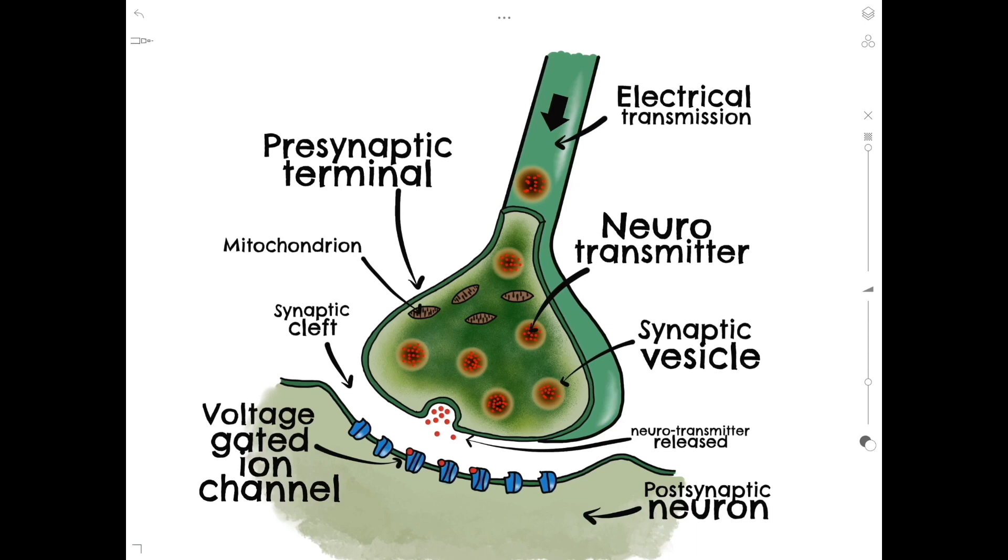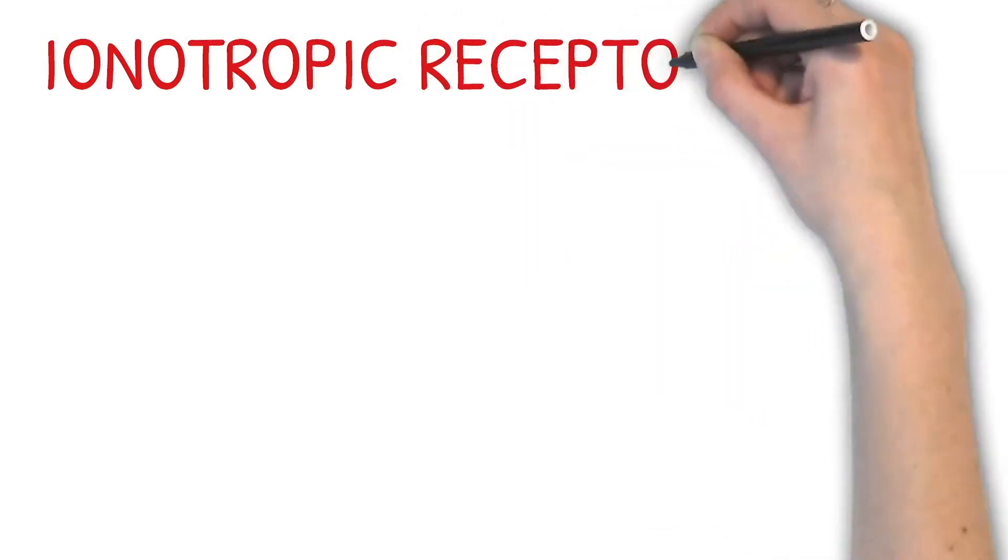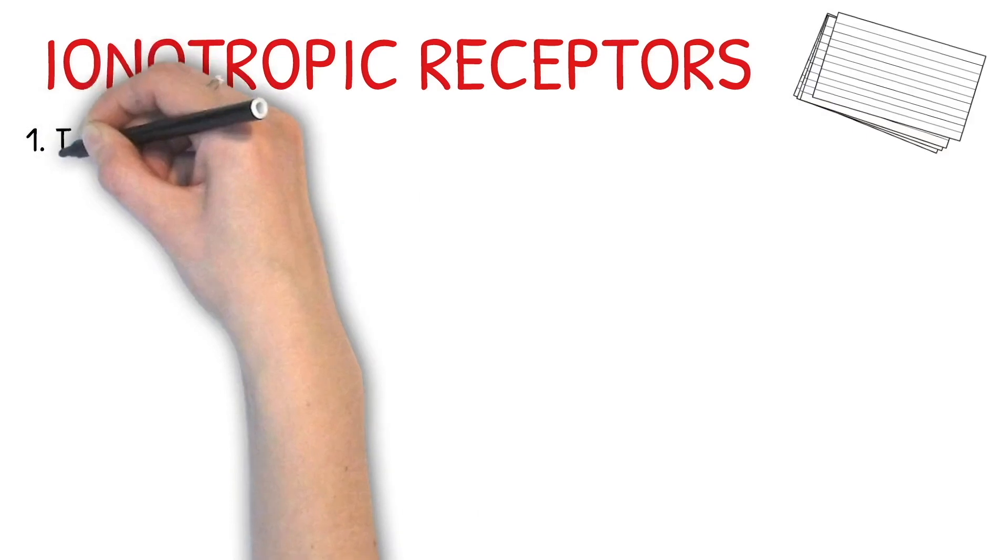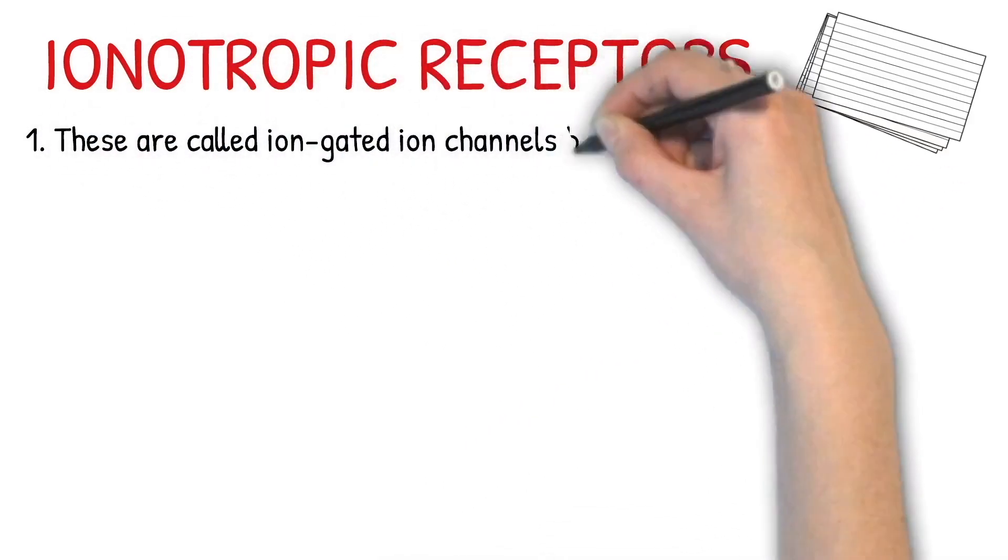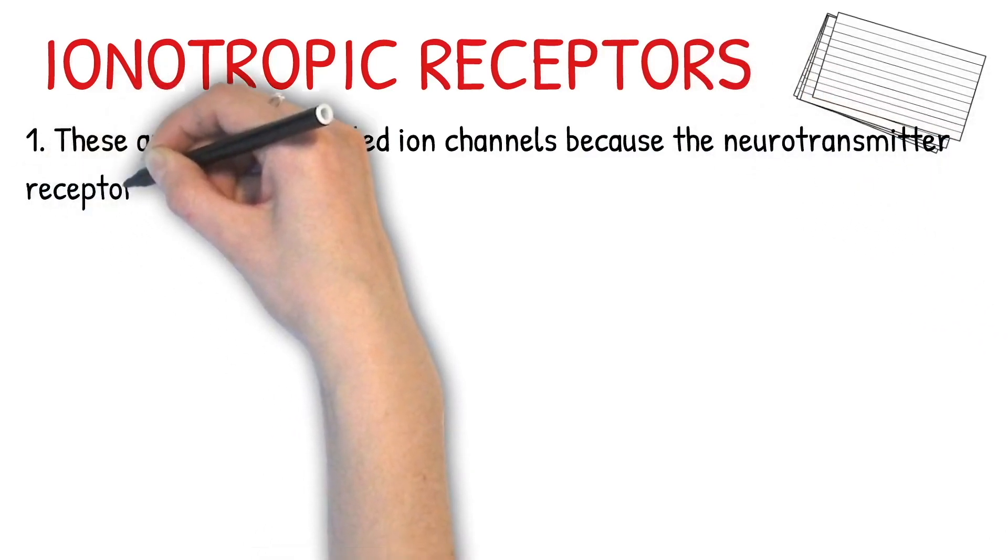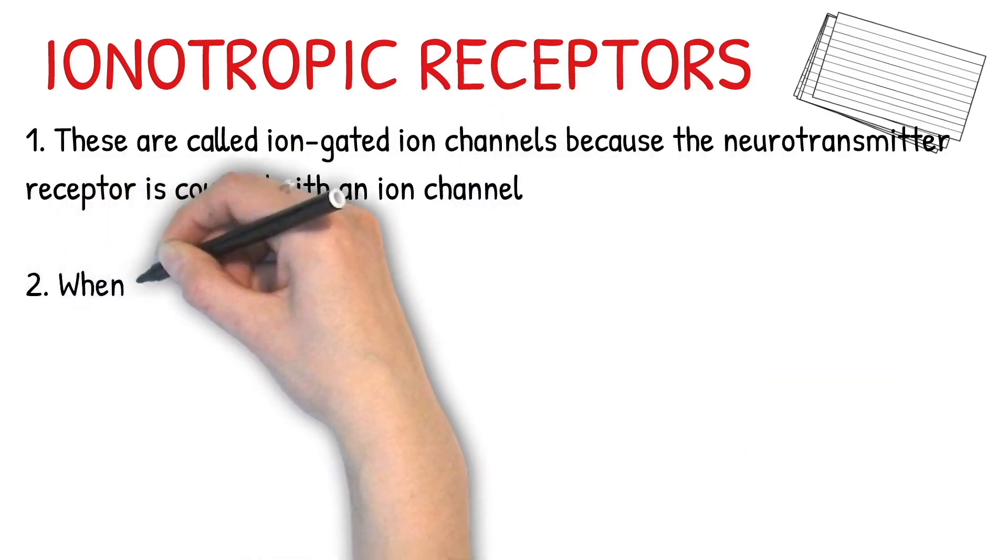Let's have a look at these receptors in a bit more detail. The first type we're going to discuss today are called ionotropic receptors. This is a receptor coupled with an ion channel which opens in response to a neurotransmitter binding to the receptor site. Ionotropic receptors generate fast responses for a short duration.